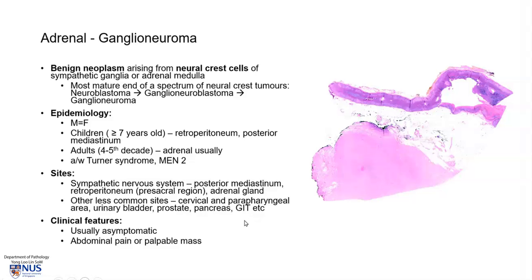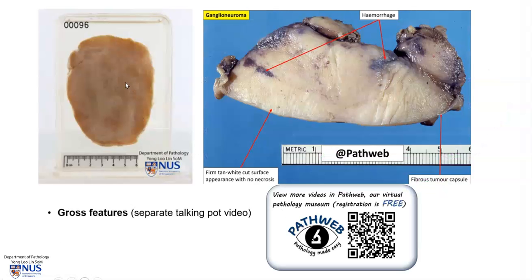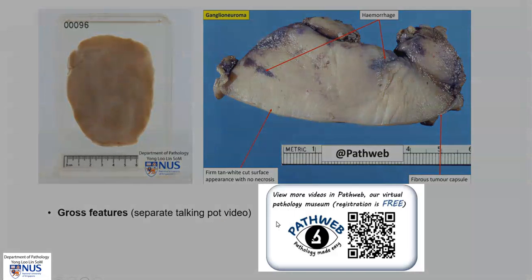These are often asymptomatic. Here is an example of the gross appearance of ganglioneuroma, and there is a separate talking pot video on this. You can access the talking pot video as well as our interactive virtual pathology specimens in our free pathology website, PathWeb — either by scanning the QR code here, or via the link for registration in the video description.